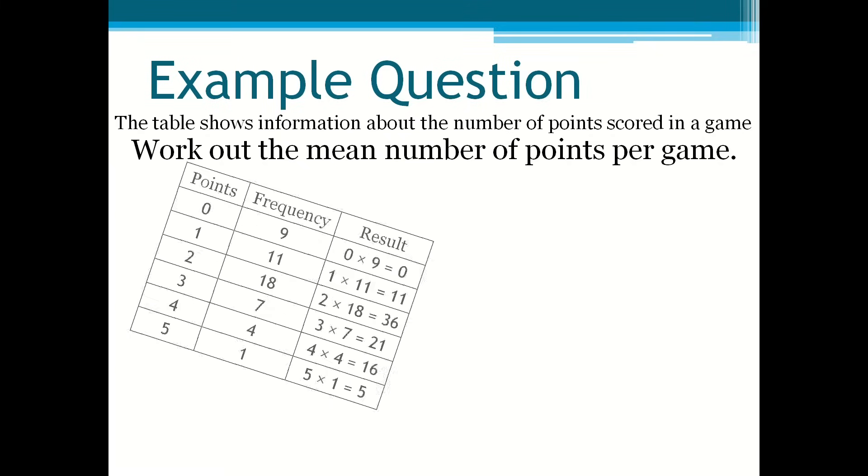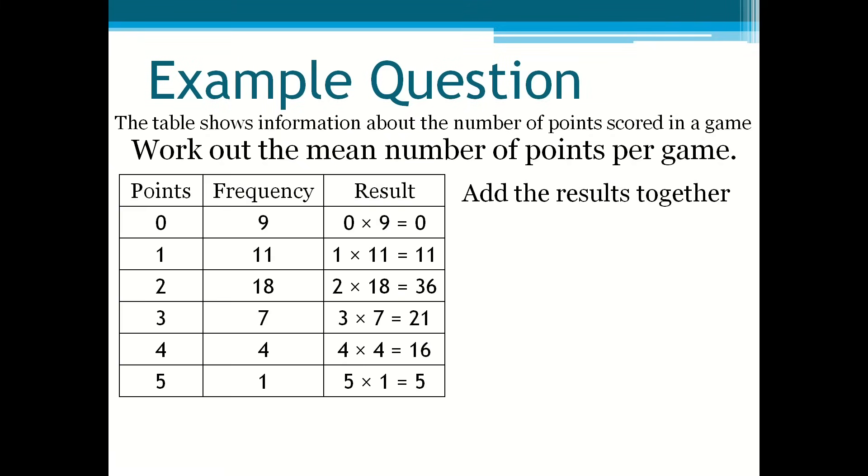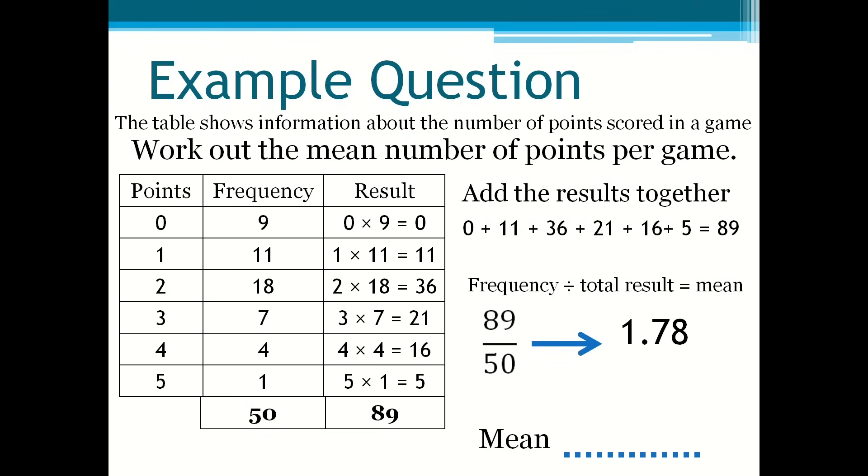Then you add all the results together from the third column and you get 89. Then remember that frequency divided by total result is equal to the mean. So you have to do 89 divided by 50 and that is 1.78. So the mean number of points per game is 1.78.